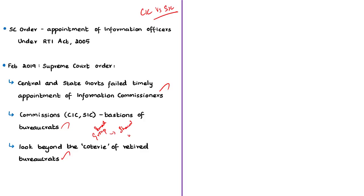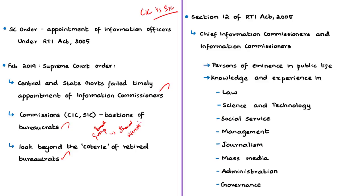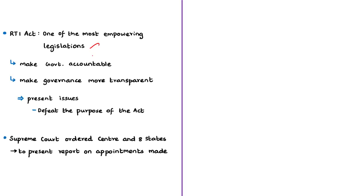Section 12 of the RTI Act of 2005 says that the Chief Information Commissioner and Information Commissioners shall be persons of eminence in public life with wide knowledge and experience in law, science and technology, social service, management, journalism, mass media, or administration and governance. This means the Act itself envisages appointments from varied domains. The RTI Act of 2005 is one of the most empowering legislations in the history of independent India — it helps people raise objections, make the government accountable, and make governance more transparent. The present issues of not filling vacancies and bias in favour of bureaucrats will defeat the purpose of the Act itself.